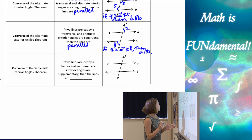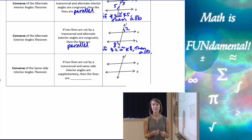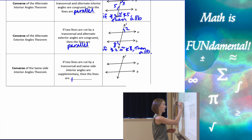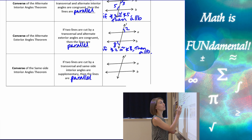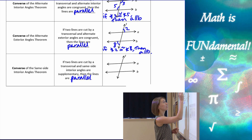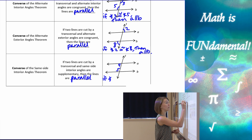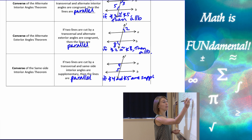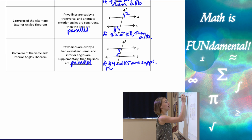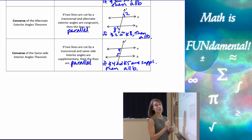The converse of the same side interior angles theorem states that if two lines are cut by a transversal and same side interior angles are supplementary, then the lines are parallel. So looking at angle four and angle five — those two angles are on the same side in the interior of the lines, and they're not congruent — but if I know that angle four and angle five are supplementary, then I can state that A is parallel to B using the converse of the same side interior angles theorem.